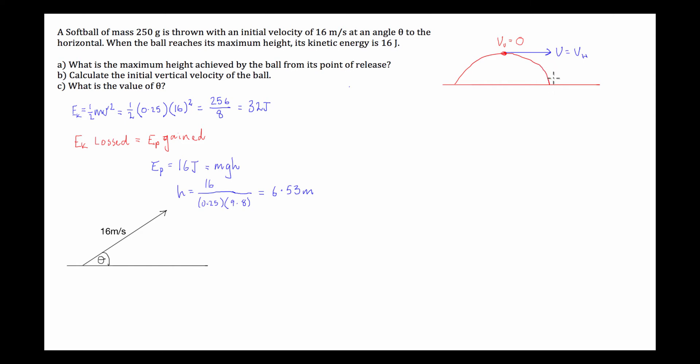So what we can do is we can say if it's at its maximum height, if its kinetic energy is 16 joules, we can say that at its point of release, the horizontal component of the ball's velocity is going to create a kinetic energy of also 16 joules. So, we can figure out what velocity is going to be required to give, with this ball, a kinetic energy of 16 joules.